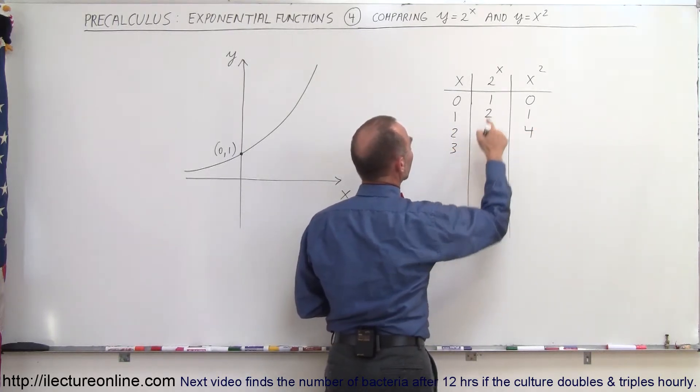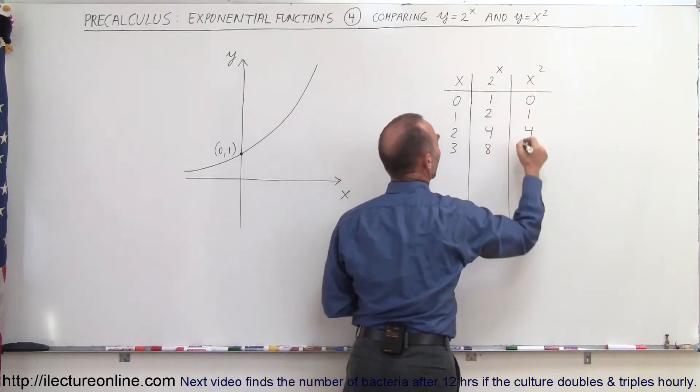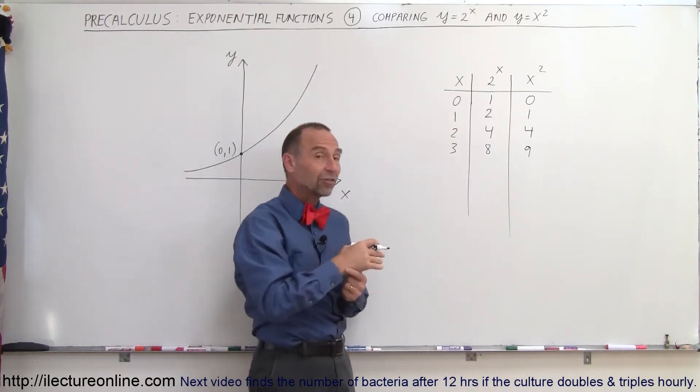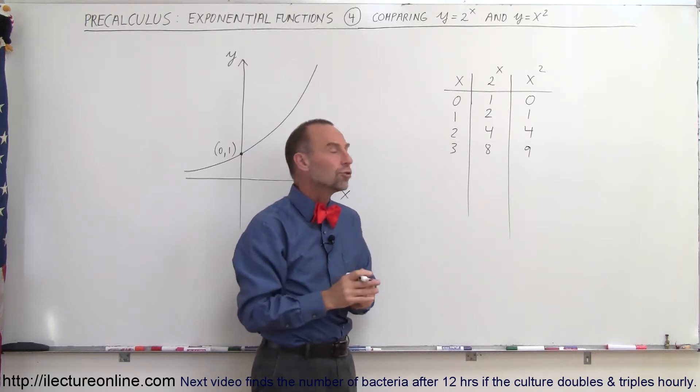Now what happens when x is equal to 3? 2 to the third power is equal to 8 and 3 to the second power is equal to 9. So you see here that the quadratic function looks like it's growing faster than the exponential function. And at first, it does indeed do that.